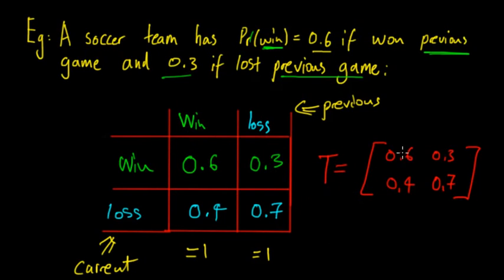So here's the transition matrix: 0.6, 0.3, 0.4, and 0.7. Now we look at the second part, which is the initial condition.